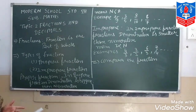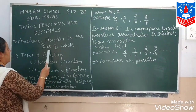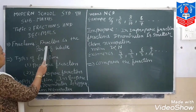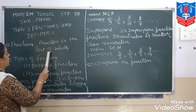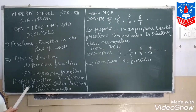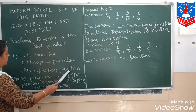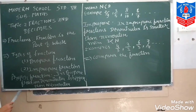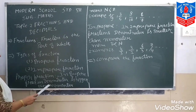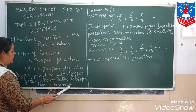First, what is the fraction? Fraction is the part of whole. I repeat, what is the fraction? Fraction is the part of whole. And there are two types of fractions: proper fractions and improper fractions. In proper fractions, the denominator is bigger than the numerator.